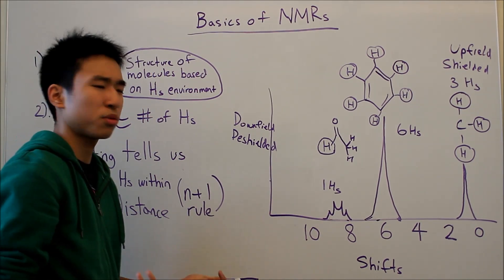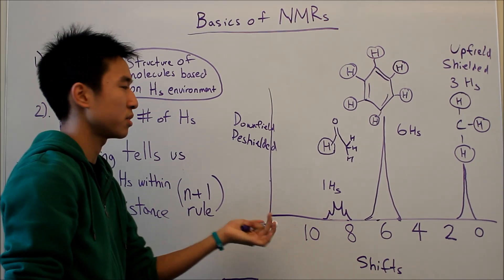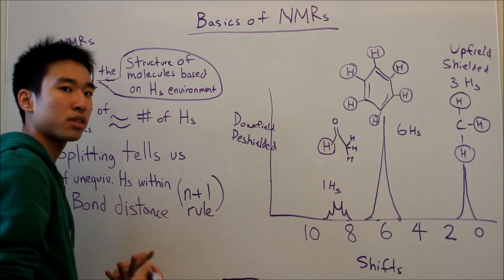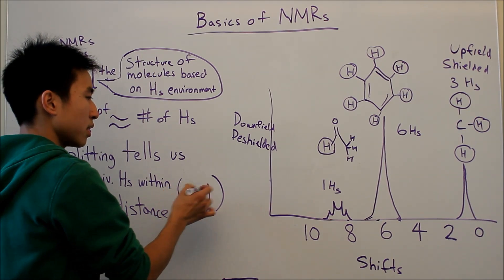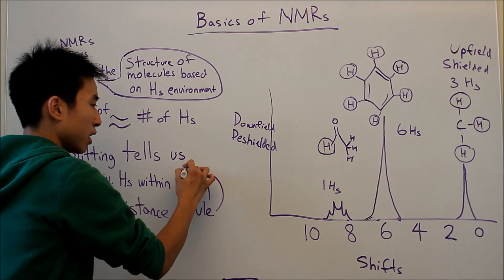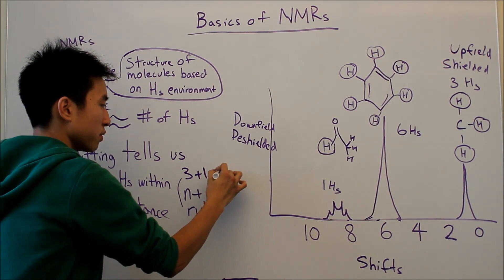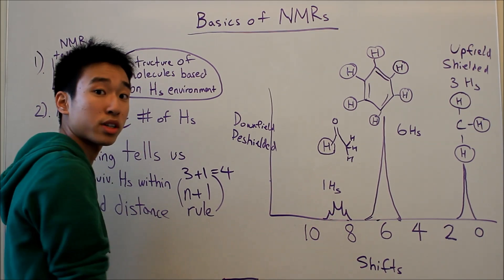So, you might be asking yourself, why is there a quartet even though there's only three unequivalent hydrogens? And it's because of the n plus one rule. I'll talk more about this in my next video, but the n stands for the number of unequivalent hydrogens. So, there's three non-equivalent hydrogens plus one is equal to four. So that's where we get our quartet.